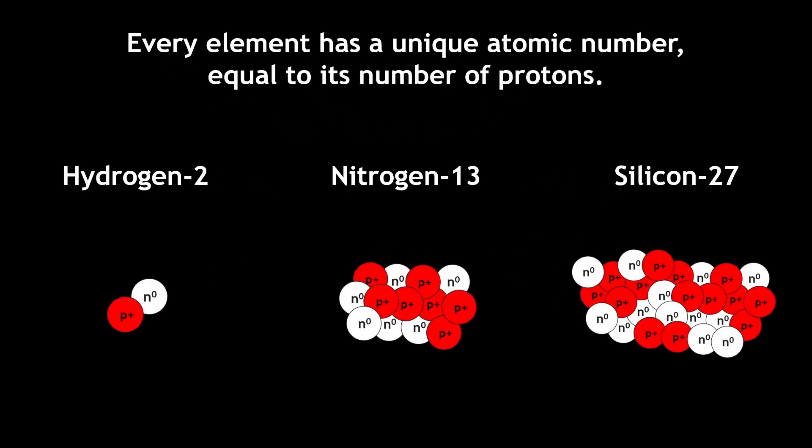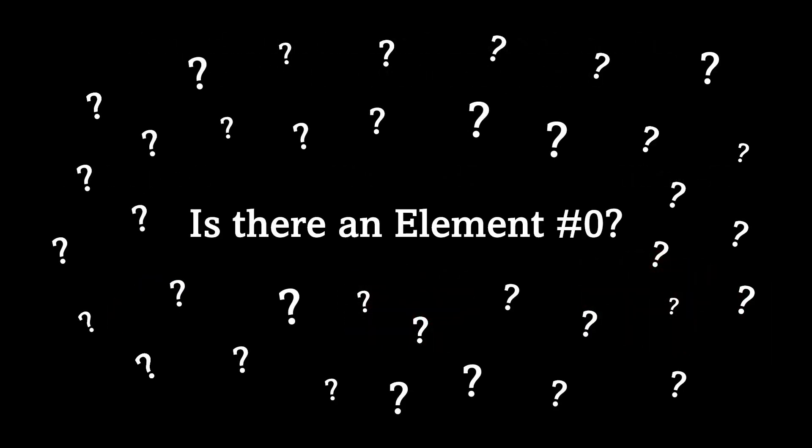Every element has a unique atomic number, equal to its number of protons. But what if I told you there's an element with an atomic number of zero?